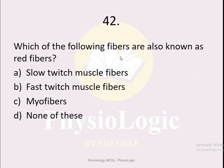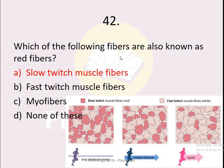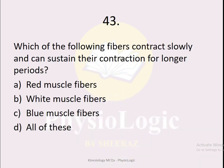MCQ number 42: Which of the following fibers are known as red fibers? Option A slow twitch muscle fibers, option B fast twitch muscle fibers, option C myofibers, option D none of these. The correct option is option A, slow twitch muscle fibers — they are called red fibers because of their high myoglobin content.